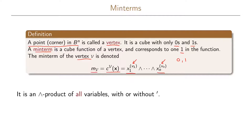They will never be the empty set and they will never be the set that we denoted b. The fact that they are only 0 or 1 makes them a corner in our n-dimensional boolean space. So a min term is an AND product of all the variables that we have, either with or without a prime.